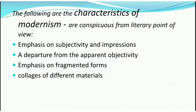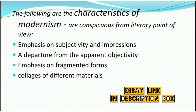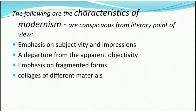The following are the characteristics of modernism conspicuous from a literary point of view. There is an emphasis on subjectivity and impressions in writing, as in the stream of consciousness technique. Impressionism in art and literature uses subjectivity to convey a truthful sense of reality. The impressionist movement focused on light and movement, dismissing still life images, and instead depicting everyday life and cityscapes.